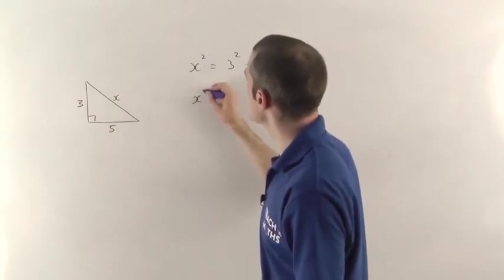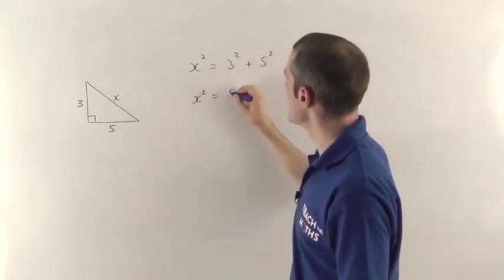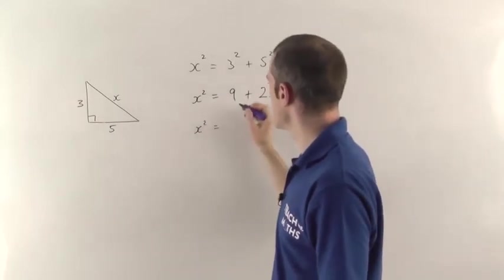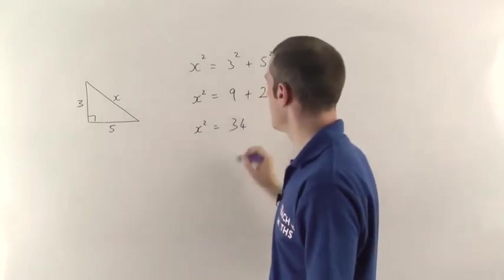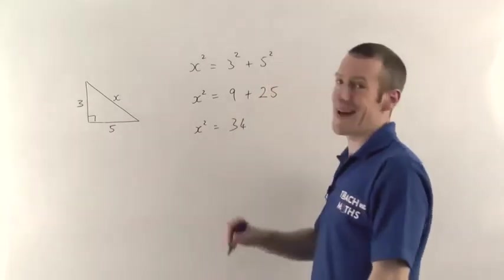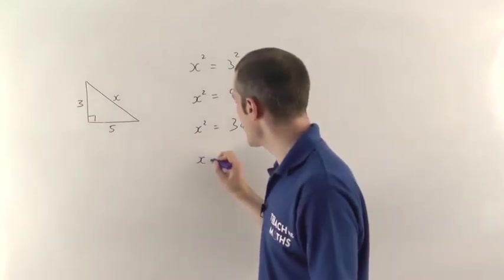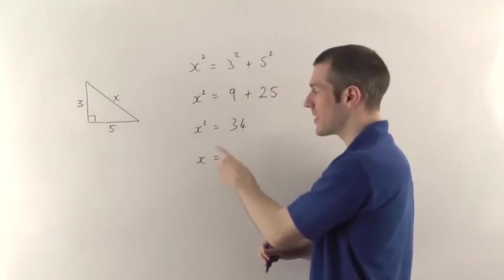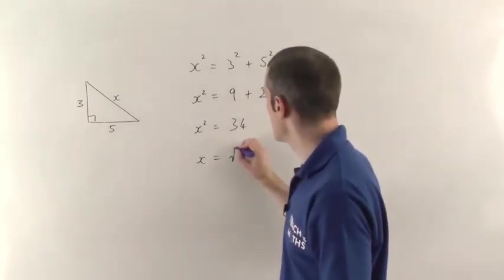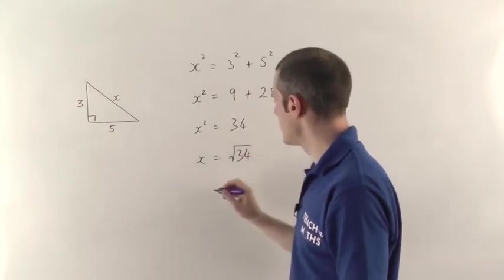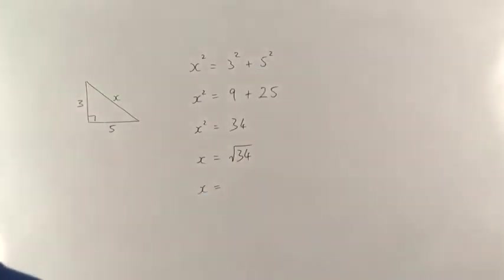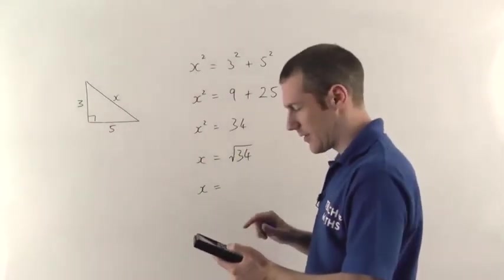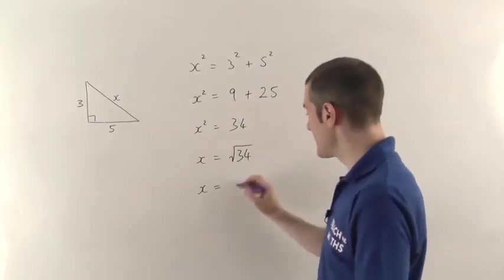Now in this case, that means that x squared is going to be 9 plus 25 which means 9 plus 25 gives you 34. Now if x squared is 34 and we want to get back and find out what x is, we do the opposite of squaring, which is square rooting. So you need to square root both sides, that will tell you what x is, and in this case it's the square root of 34, which we'll need our calculator for and we find out that it is 5.8 to 1 decimal place.